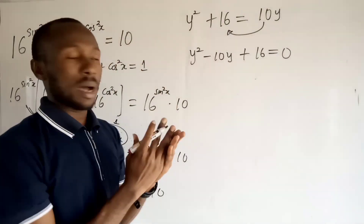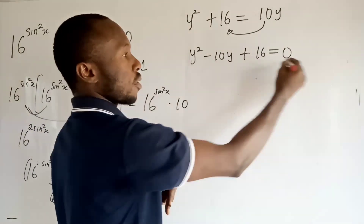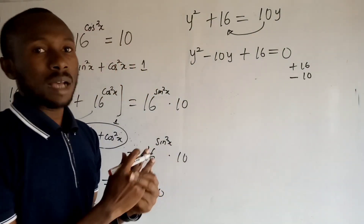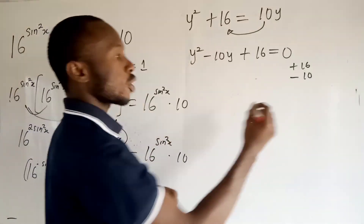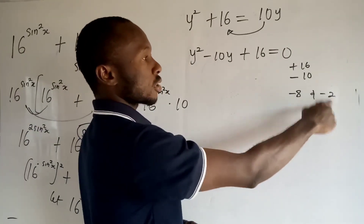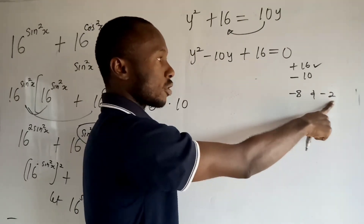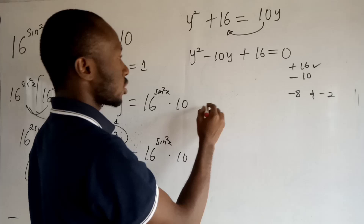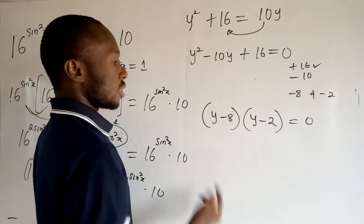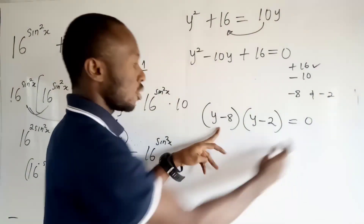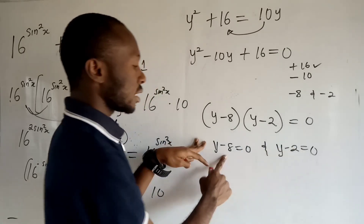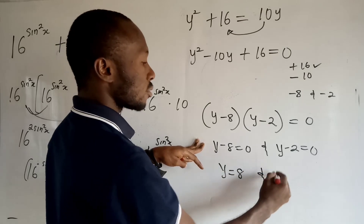I'm looking for two numbers such that when I multiply them I get positive 16, and when I add them I get negative 10. Those two numbers are minus 8 and minus 2: minus 8 times minus 2 gives positive 16, and minus 8 plus minus 2 gives minus 10. So the equation factors as (y minus 8)(y minus 2) = 0, giving y = 8 and y = 2.